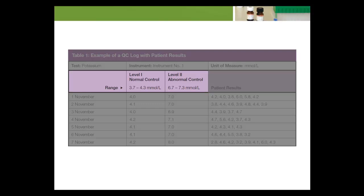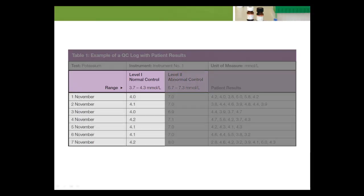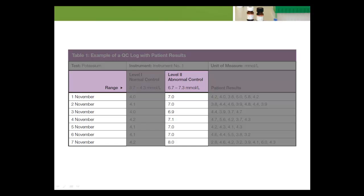In Table 1, there are two ranges reported. The acceptable range for Level 1, also referred to as the Normal Control, is 3.7 to 4.3 mmol/L. The range for Level 2, also referred to as the Abnormal Control, is 6.7 to 7.3 mmol/L. When daily QC results for the normal control are compared to the defined range, each result lies within the expected range, indicating the analytical process is in control. When the daily QC result for the abnormal control (high potassium) is compared to its defined range, the analytical process is shown to be in control for each day of testing except the last day, November 7th.